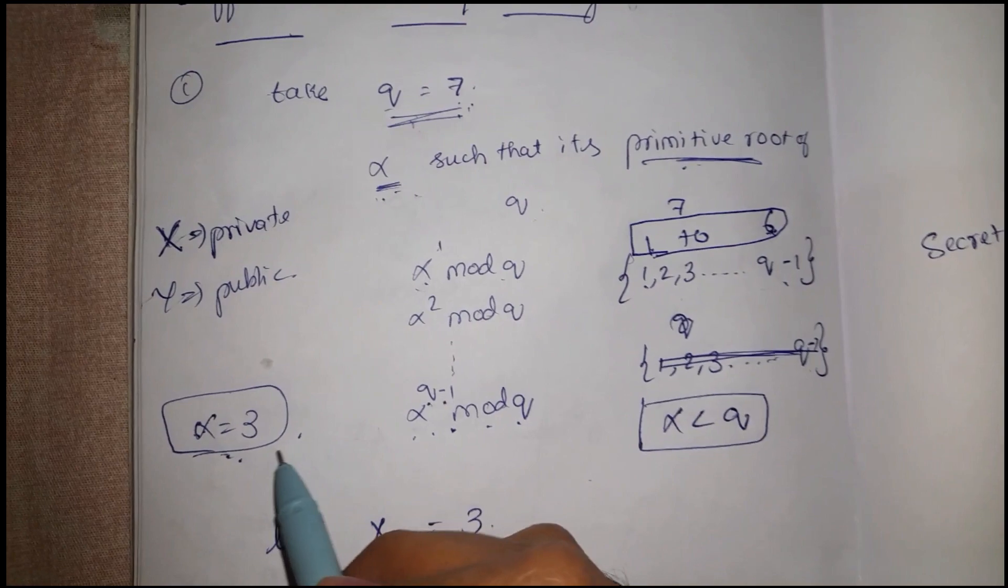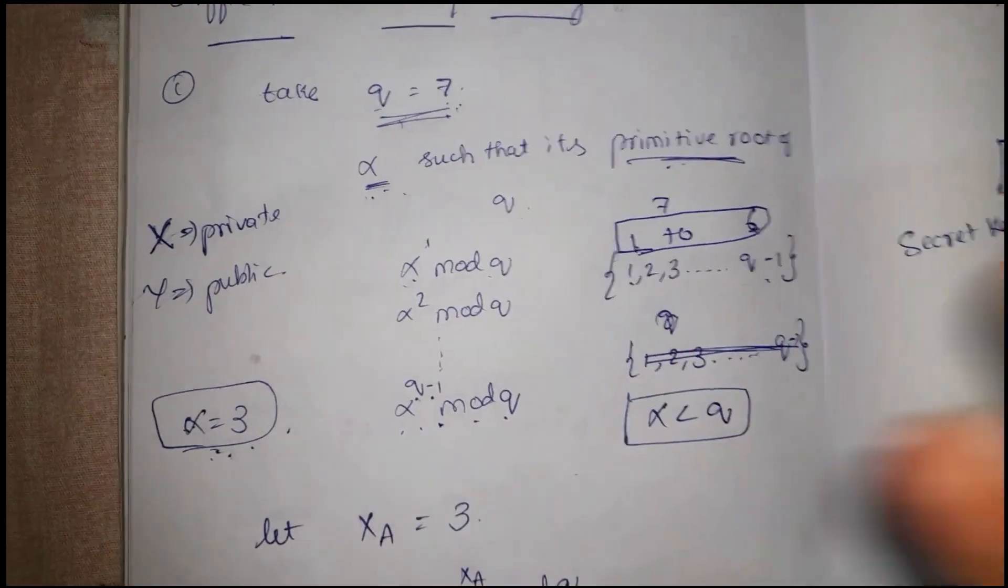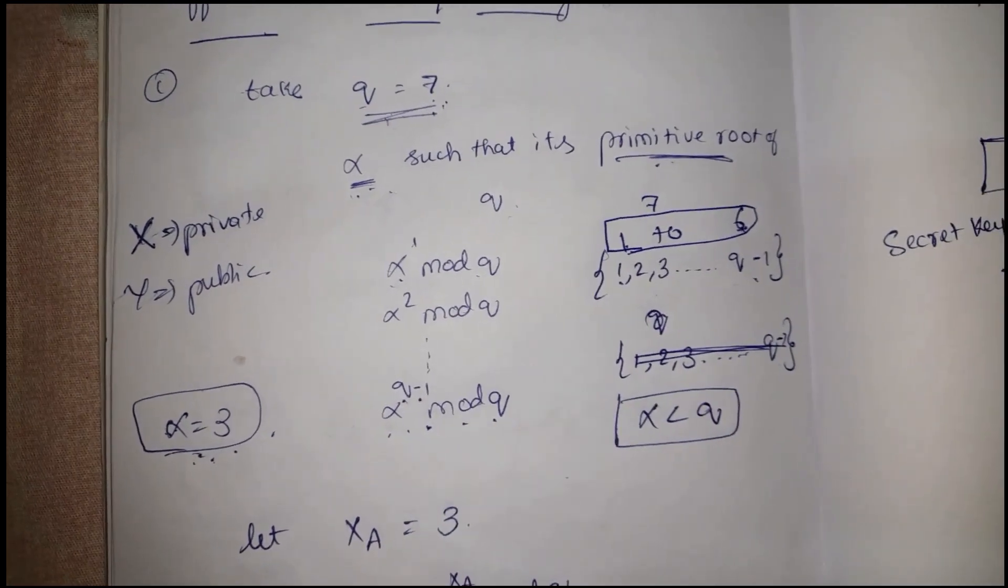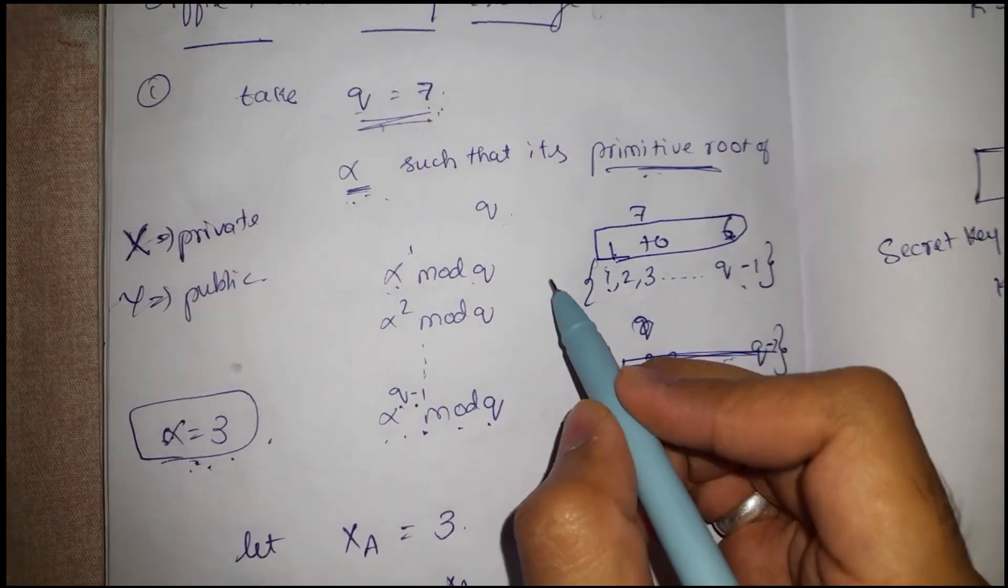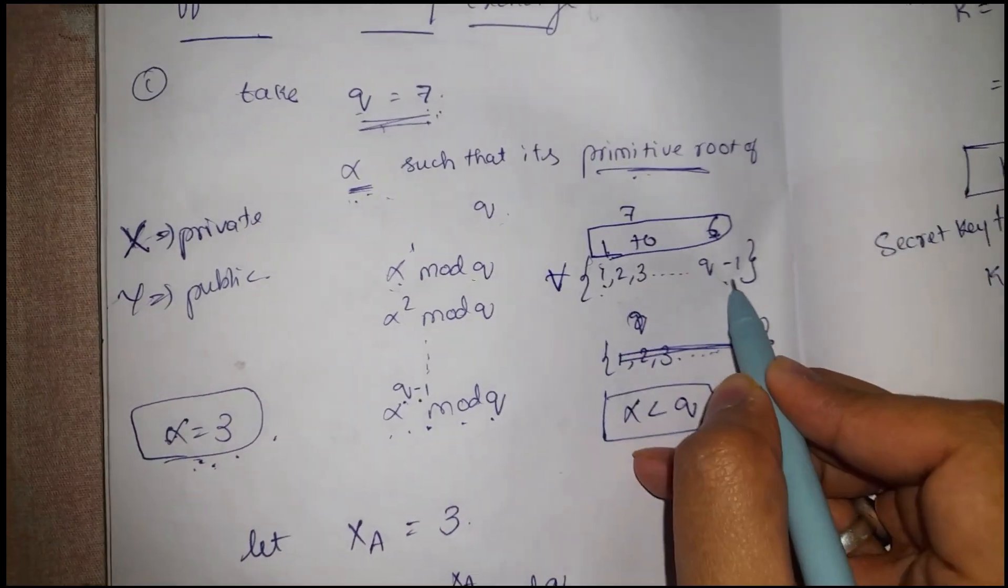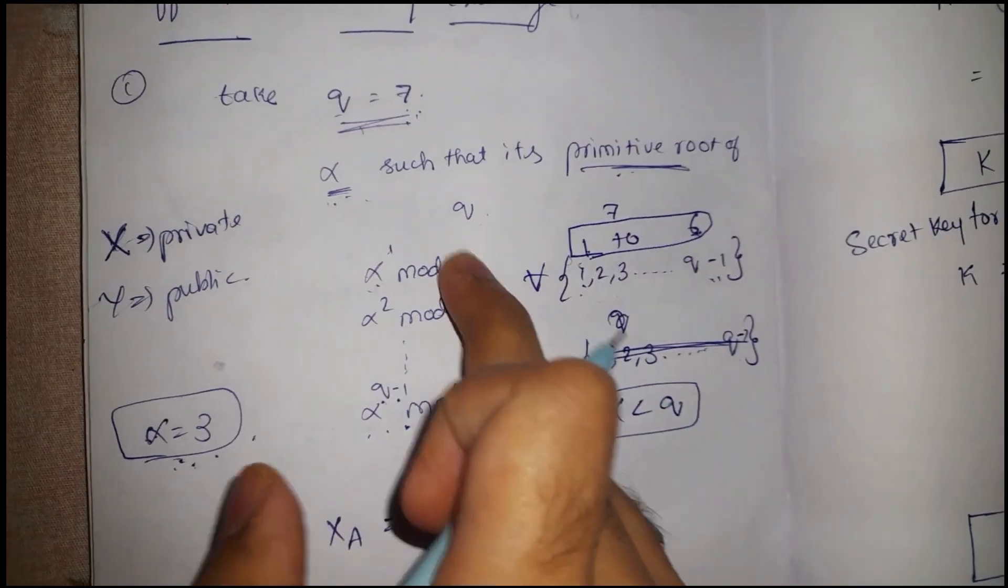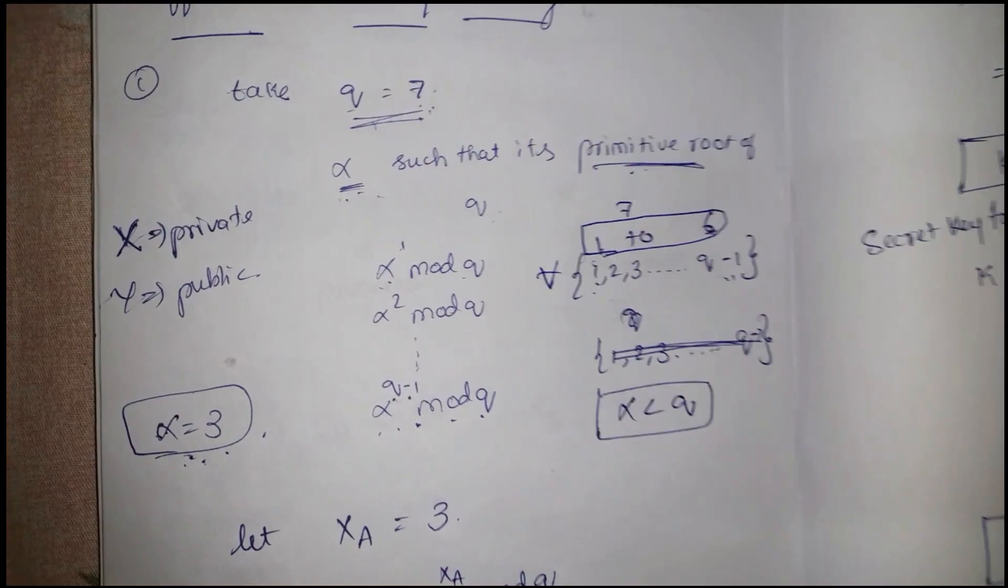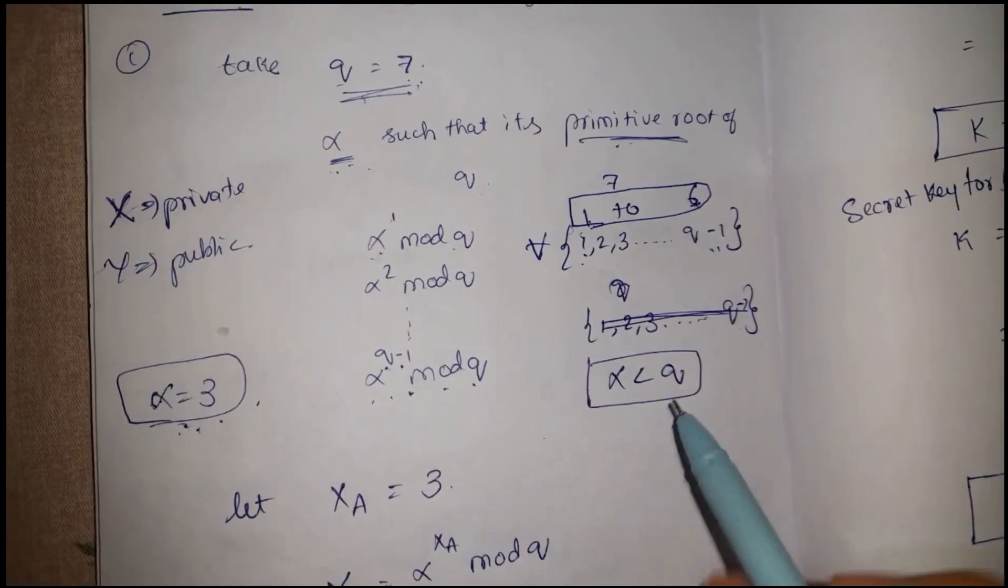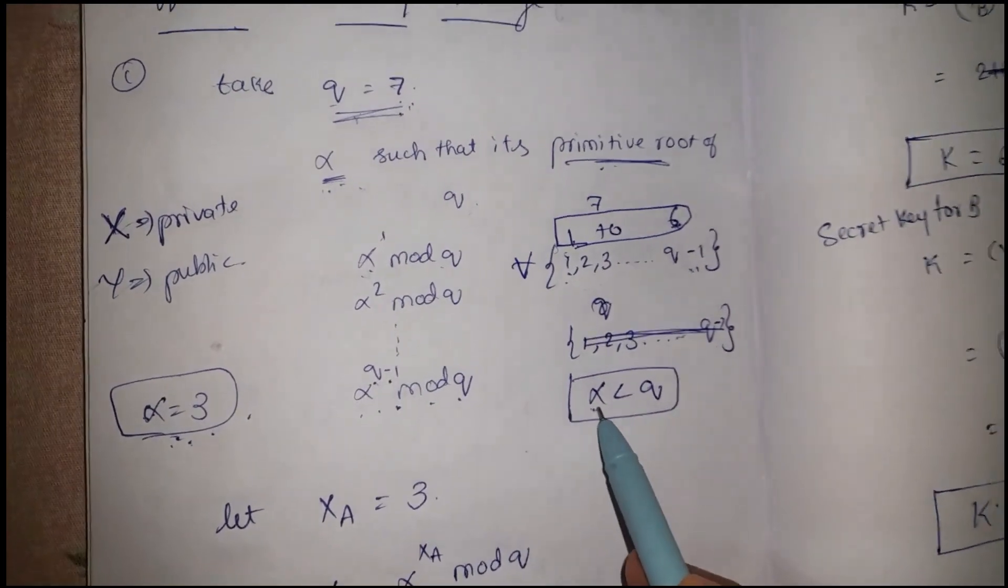For this, I have taken alpha equal to 3. You can take 5, you can try it out with 5, 6, or anything, but this condition has to be satisfied for all 1 to q-1.